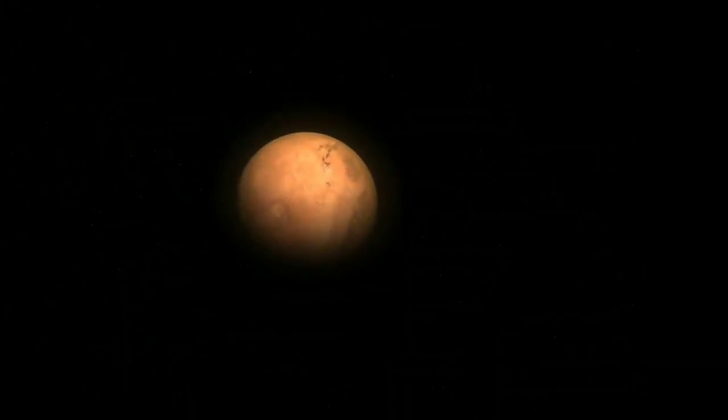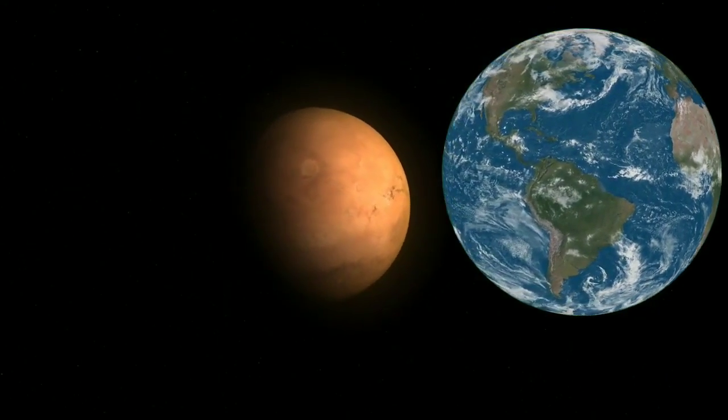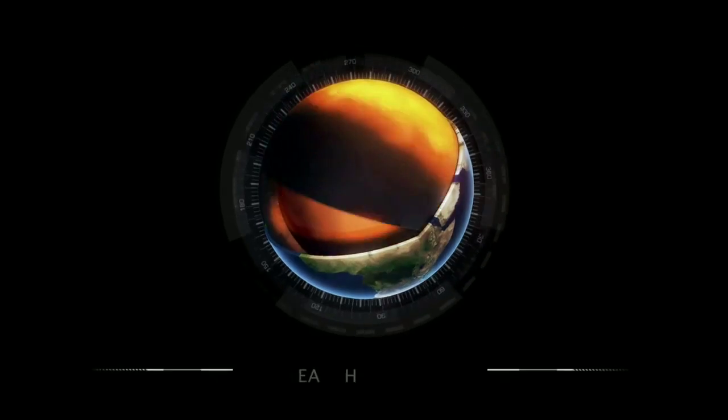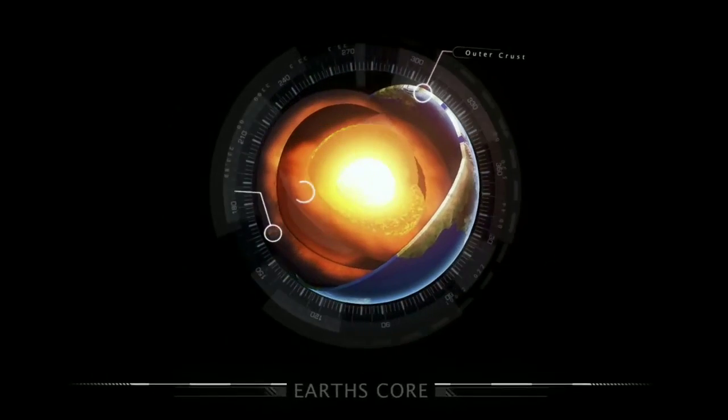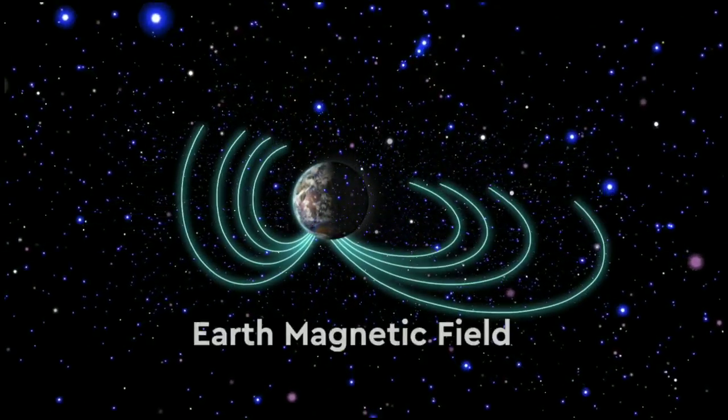Sadly, Mars was doomed from the start. It's smaller than Earth, which means it cooled off much faster. The core of our planet is still molten, and that spinning blob of iron in the center of Earth powers our strong magnetic field.